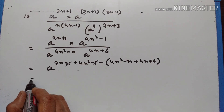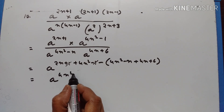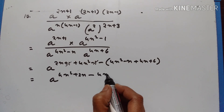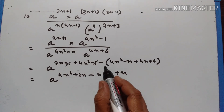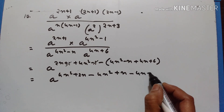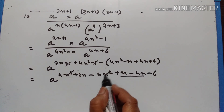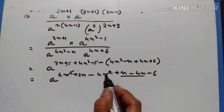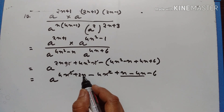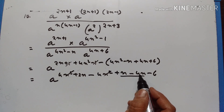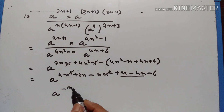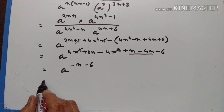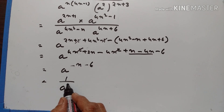a raised to the power of 2n plus 1 plus 4n squared minus 1, minus 4n squared minus n, plus 4n plus 6. 1 and 1 cancel off. a raised to the power of 4n squared plus 2n minus 4n squared, minus into minus gives plus n, minus 4n minus 6. 4n squared and minus 4n squared cancel off. 2n plus n equals 3n; 3n minus 4n equals minus n. a raised to the power of minus n minus 6, therefore equal to 1 upon a raised to the power of n plus 6.